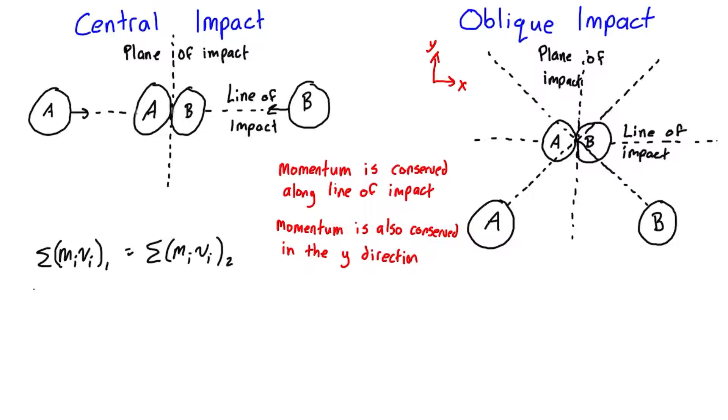So in this case in particular we have m_A v_A1 + m_B v_B1 = m_A v_A2 + m_B v_B2.